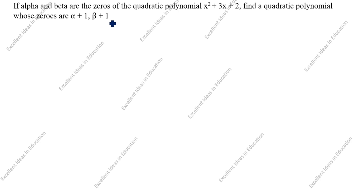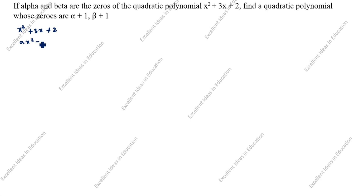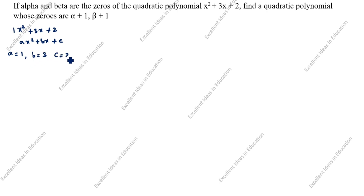What is given in this question? x squared plus 3x plus 2. The standard quadratic polynomial equation is ax squared plus bx plus c. Here a is equal to 1 — since nothing is given, we take it as 1. b is equal to 3, c is equal to 2.